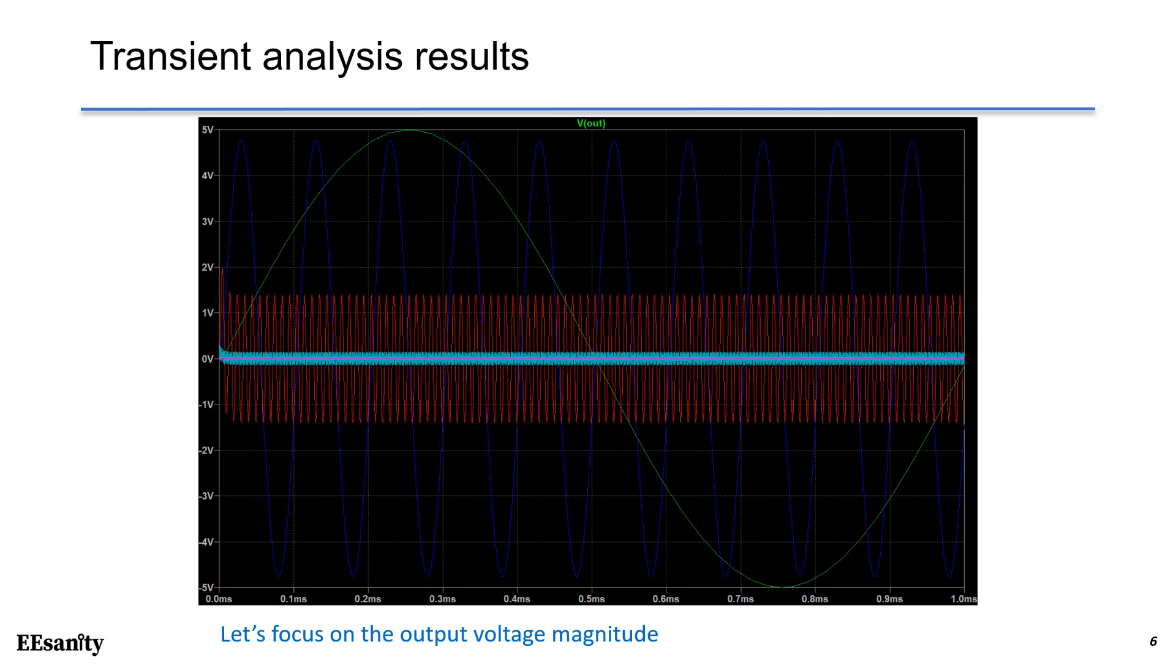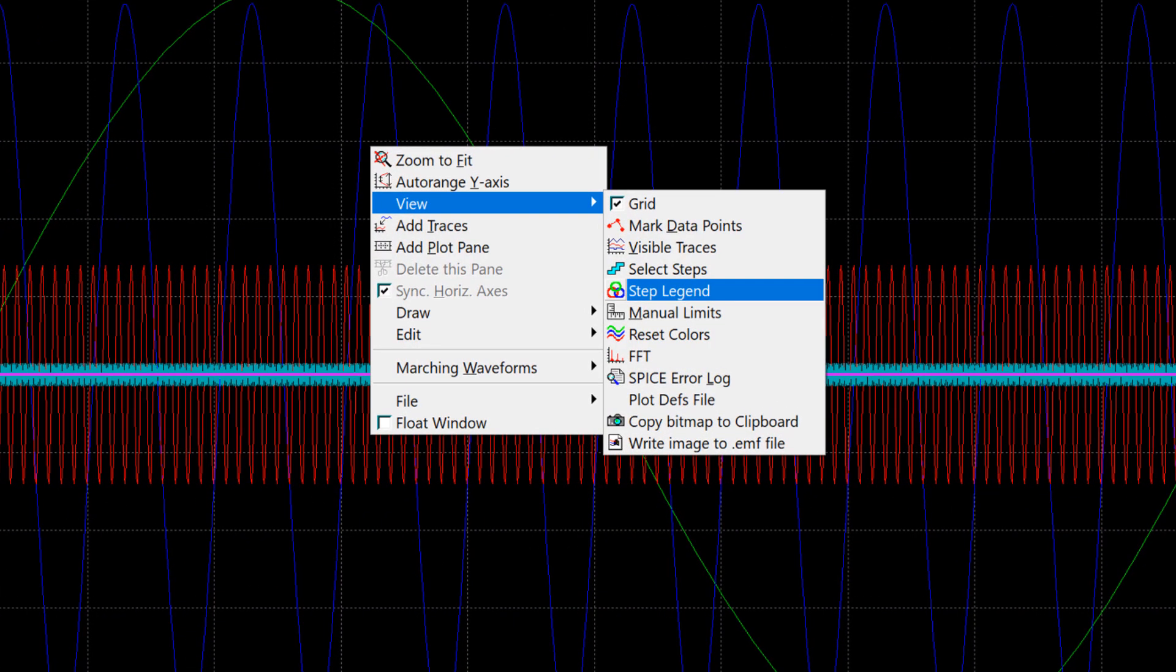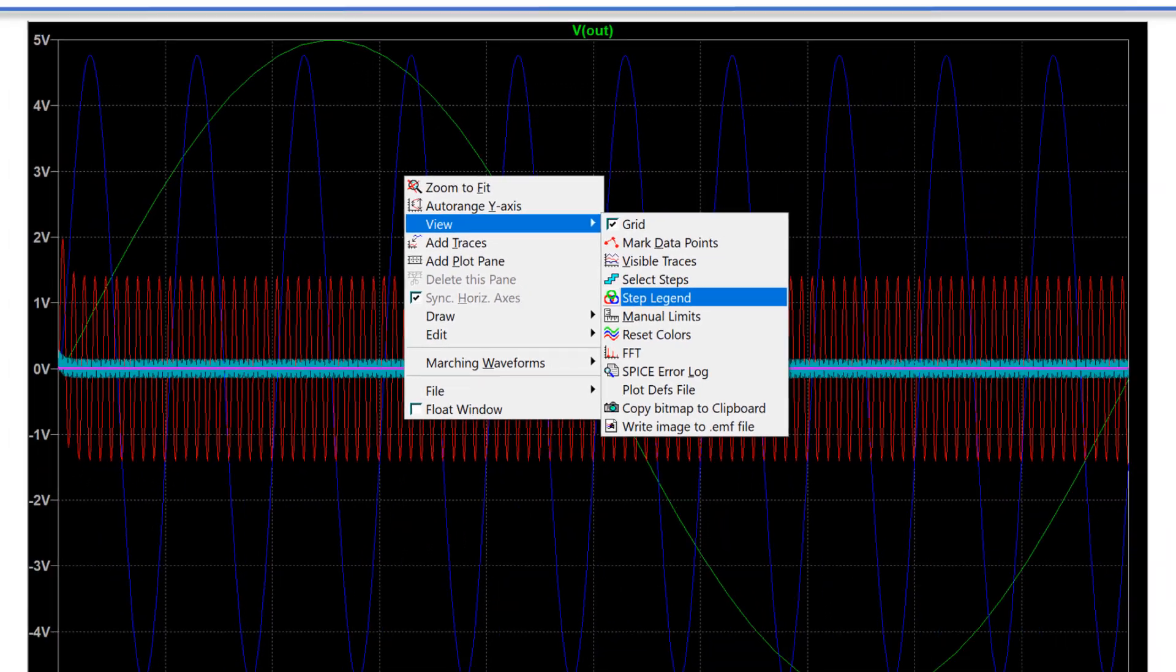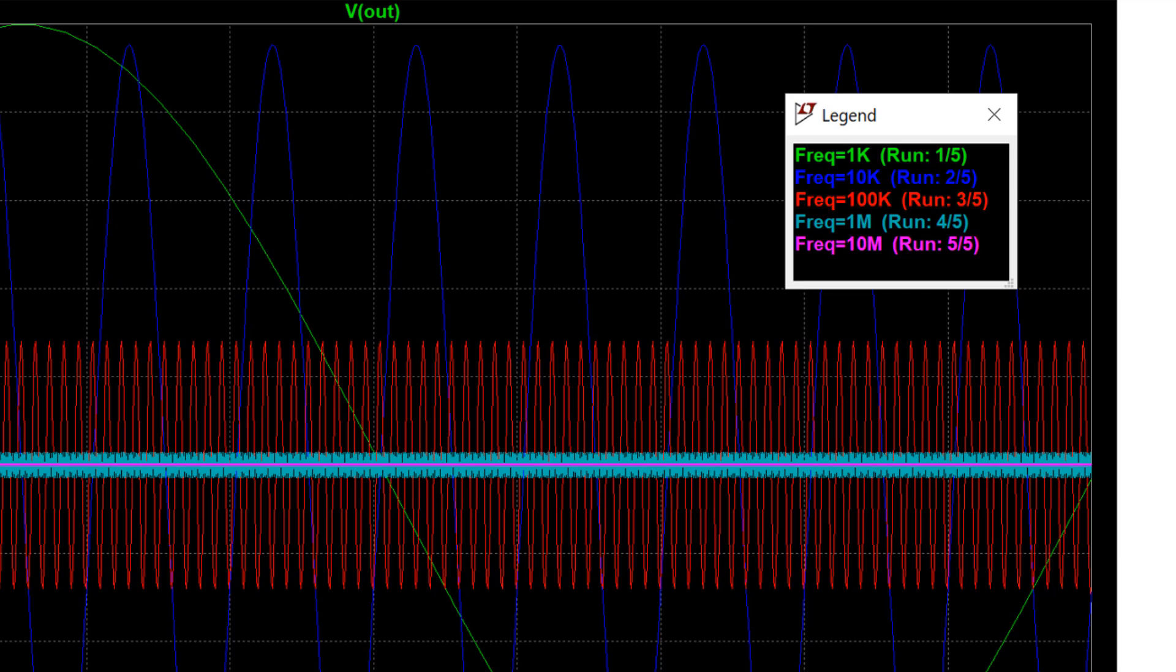This slide gives you the transient simulation results over different steps on frequency. Let's focus on the output voltage magnitude. For now, you don't know the color of each trace. We can right-click, go to View, and choose Step Legend.